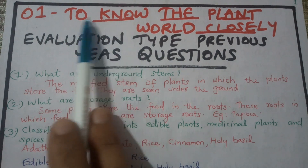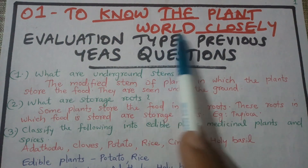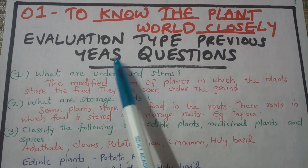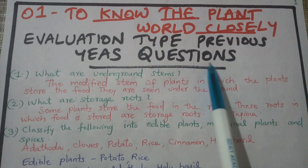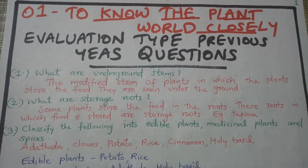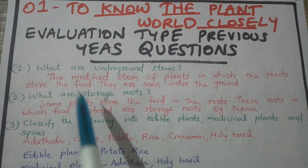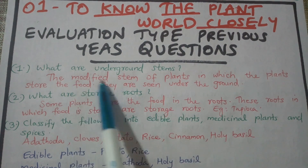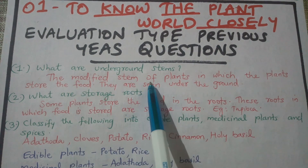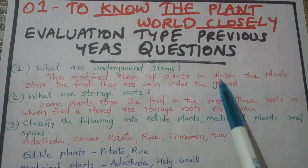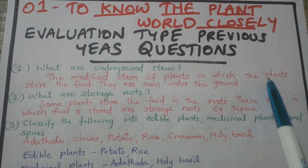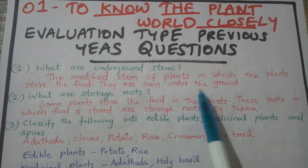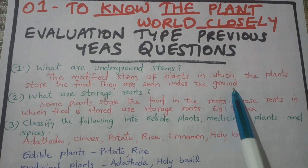The first chapter we are going to know is the plant world closely. Evaluation type: previous year questions. Question number 1: What are underground stems? The modified stems of plants in which the plants store food. They are seen under the ground.